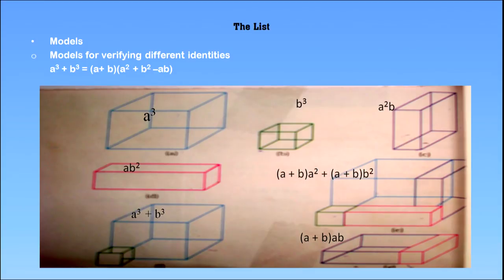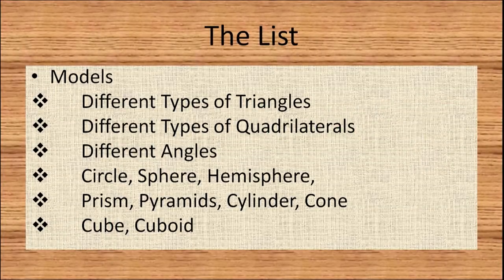We can have models of different types of triangles, different types of quadrilaterals, different angles, circle, sphere, and hemisphere. We can have models for prism, pyramids, cylinder, cone, cube, and cuboid.